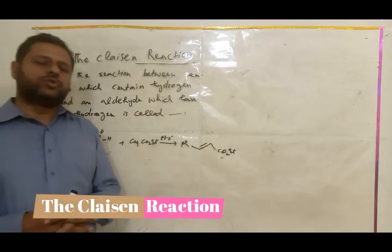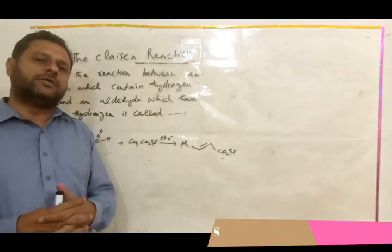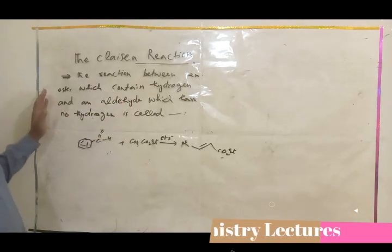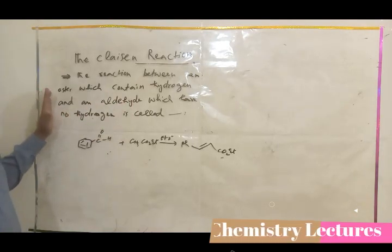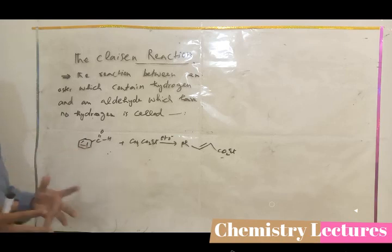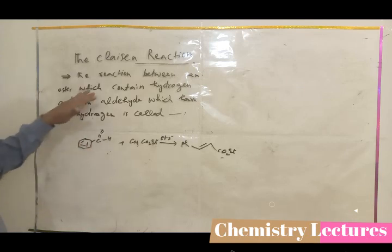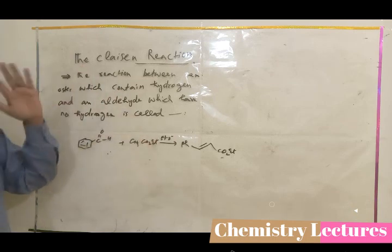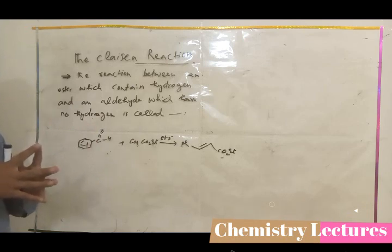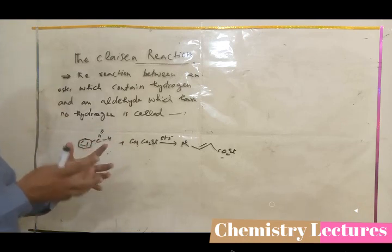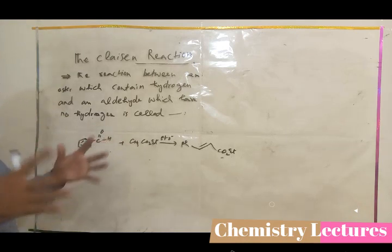Today we will discuss another important type of base-catalyzed condensation reaction called the Claisen reaction. It is a simplified form of base-catalyzed condensation reactions. Whenever you treat an ester with an aldehyde, this is called the Claisen reaction. The condition is that the ester must contain the alpha hydrogen so that the carbanion will be formed from the ester, but the aldehyde must not contain an alpha carbon. When you treat the aldehyde and ester together in the presence of base, the base will only abstract a proton from the ester, and the ester will attack on the aldehyde.